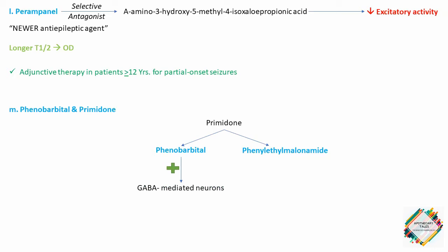Next is phenytoin and fosphenytoin. Phenytoin blocks the voltage-gated sodium channels by selectively binding to the channel in the inactive state and thereby slowing its rate of recovery. It is effective for treatment of focal as well as generalized tonic-clonic seizures and in the treatment of status epilepticus.